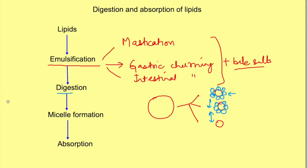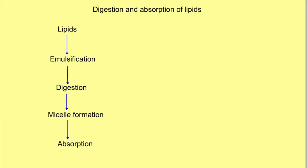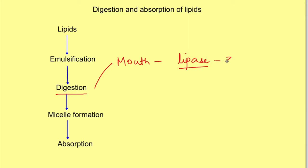Digestion of lipids starts in the mouth itself because saliva contains salivary lipase. However, salivary lipase is responsible for only about 3% of lipid digestion. The stomach also has gastric lipase, and together salivary and gastric lipase are responsible for about 10% of fat digestion.